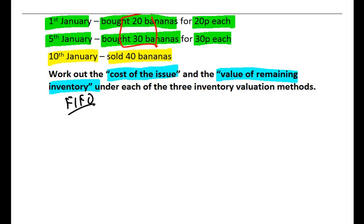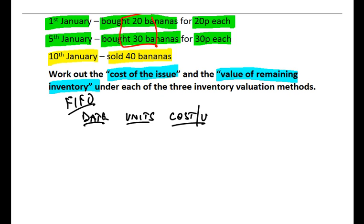You can grab a scrap of paper and set up a little table. I'll have a column for the dates — in this case the 1st, 5th, and 10th of January. For each transaction I'll consider the number of units involved — how many bananas were bought or sold — then the cost per unit, remembering that the cost per unit was changing over time, and then the total cost of each transaction.